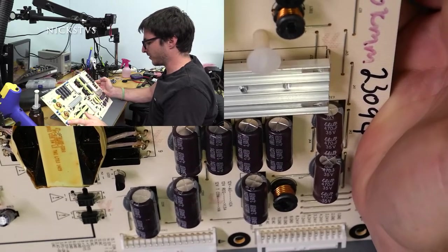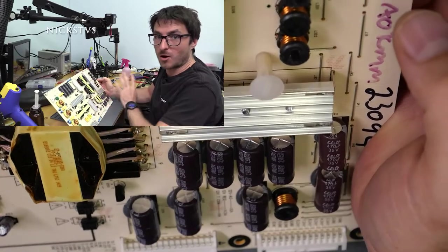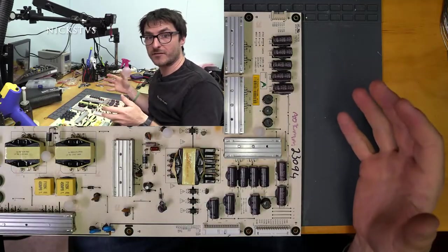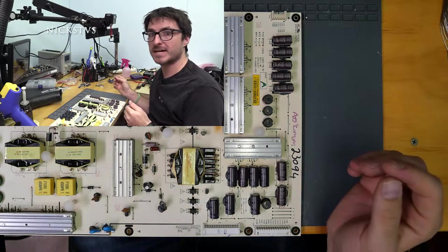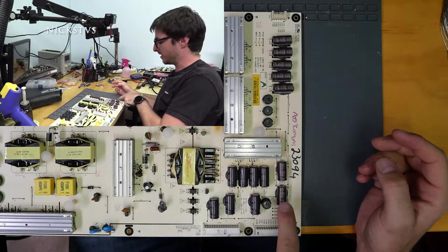Now, as a rule of thumb, typically with these types of boards, we do want to replace all of the capacitors, so that's what we're going to do. With this model TV, which is a P702UI-B3, we will see these capacitors over here bulge, as well as these two,